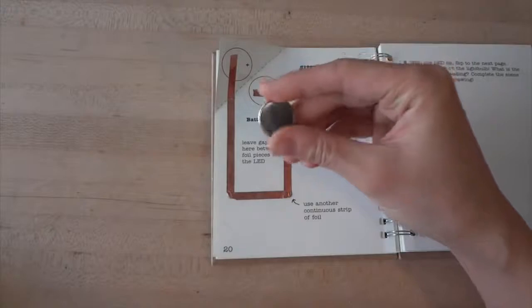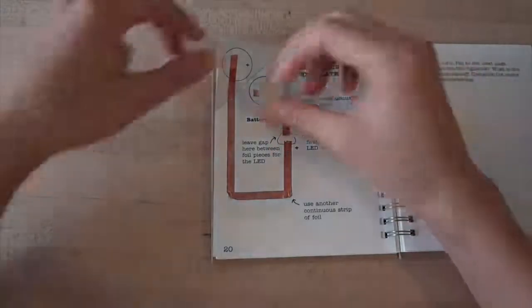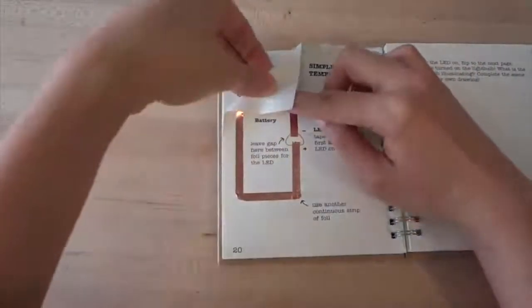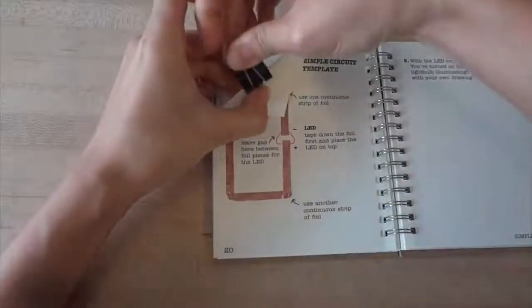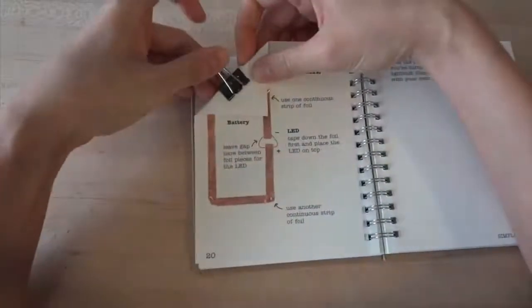Next, we'll add our battery, which is going to power our circuit. Place it plus side up to match the circles on the template. Fold your corner down over and clip your battery in place with the binder clip.